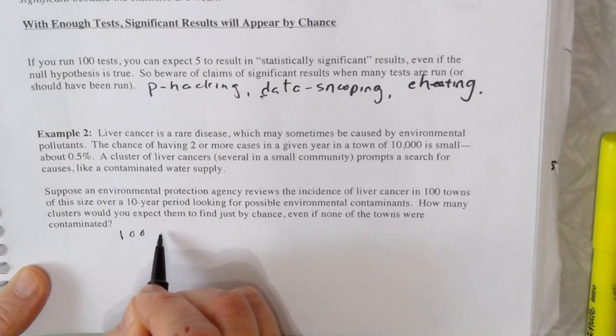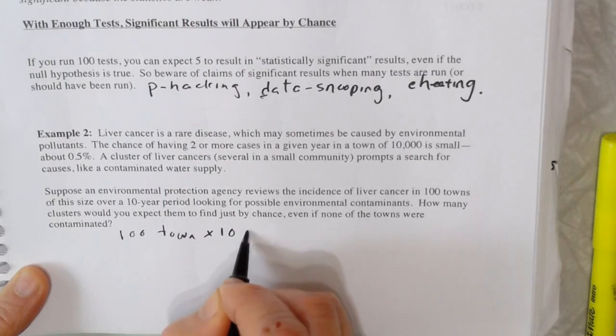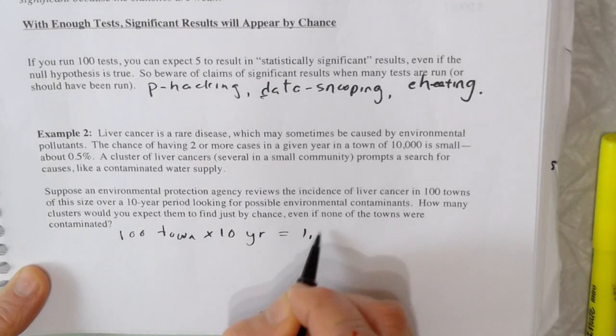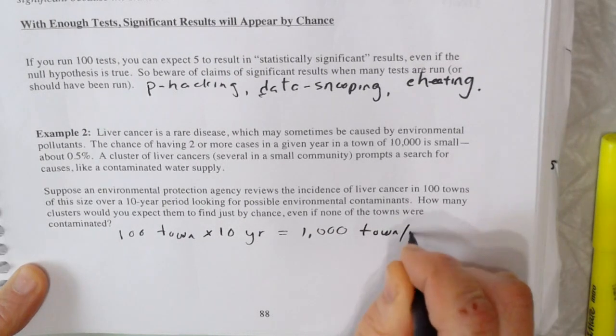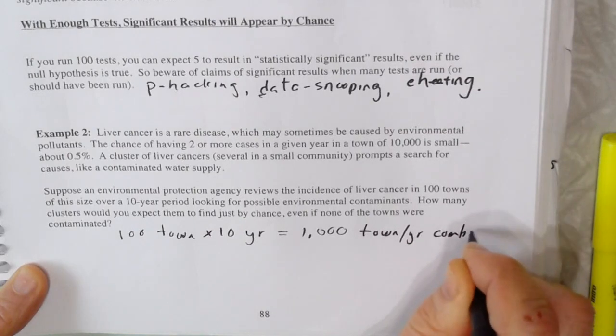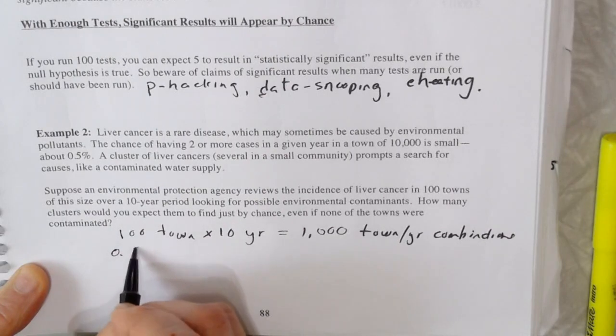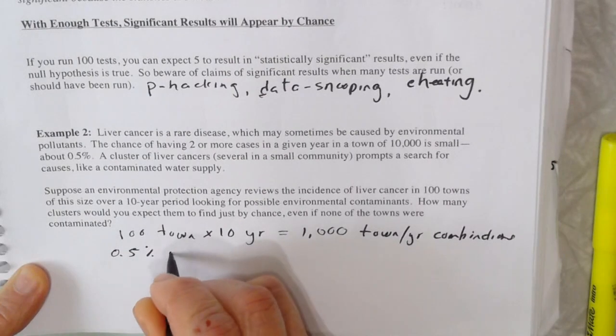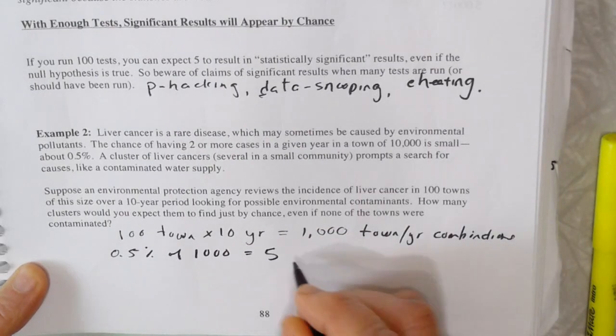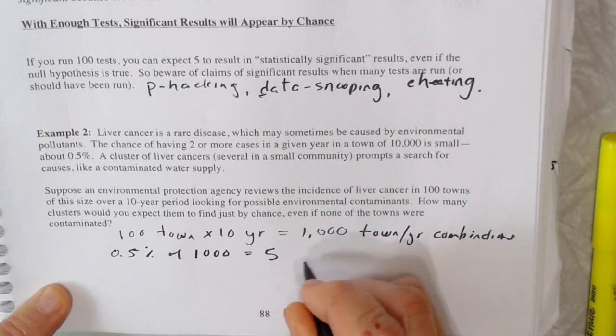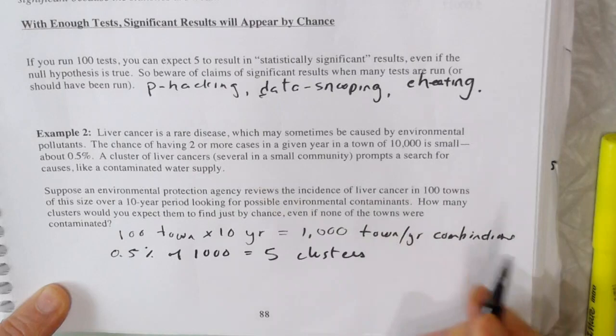Well, if you have a hundred towns over 10 years times 10 years, that's a thousand cases, a thousand town year combinations. And 0.5% of a thousand is equal to five. So you'd expect five clusters of liver cancer,